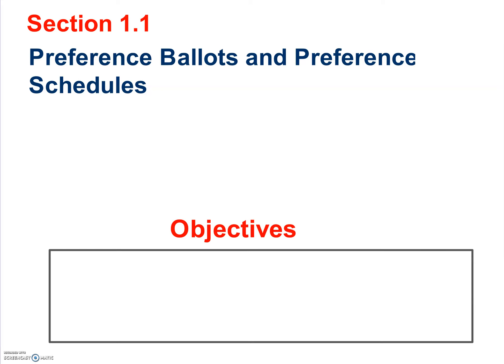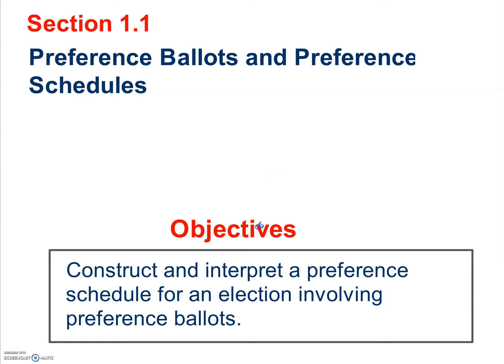Today is going to be mostly vocabulary, so bear with the videos and pause as needed to fill out your notes. Chapter one is all about voting, and we're doing two sections today. Section 1.1 is preference ballots and preference schedules. By the end of this class, you need to be able to construct and interpret a preference schedule for an election involving preference ballots.